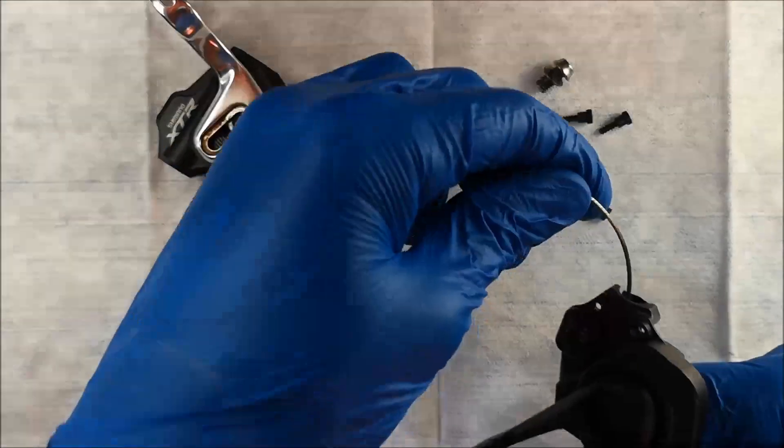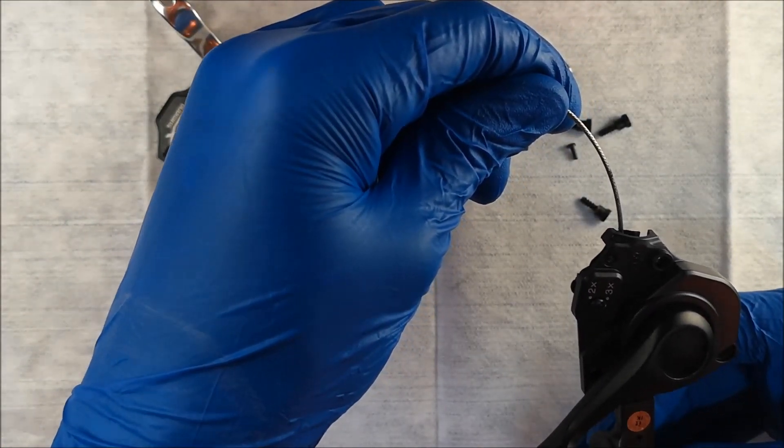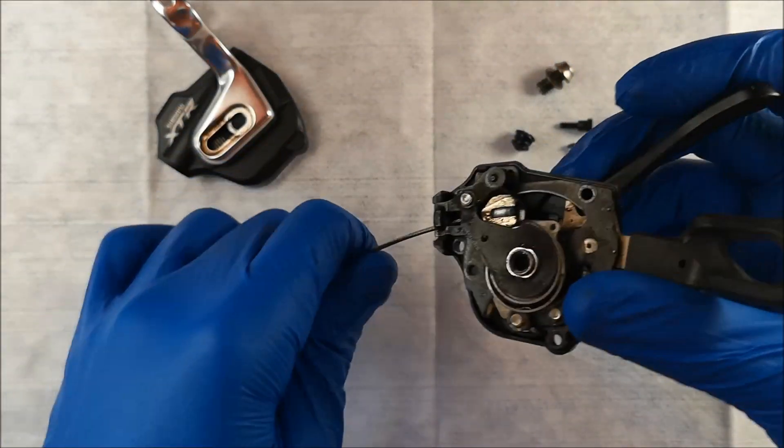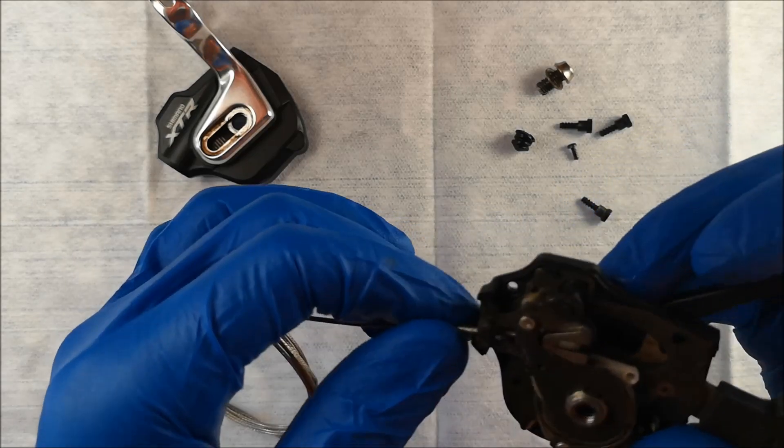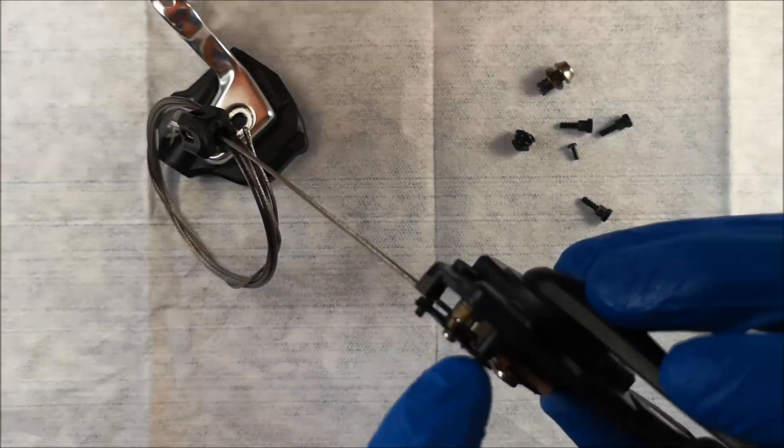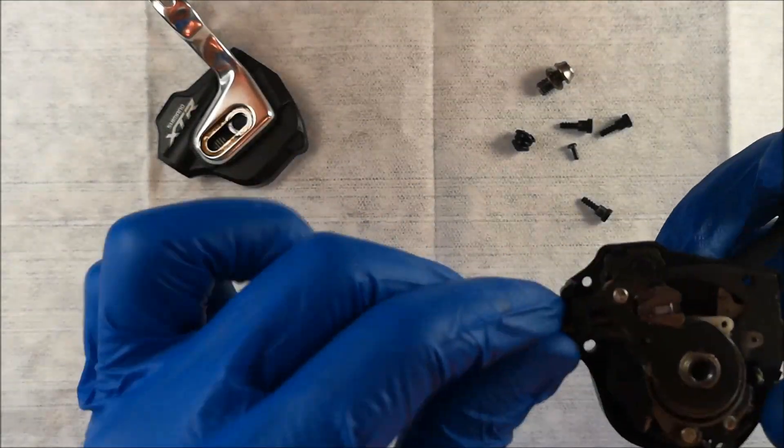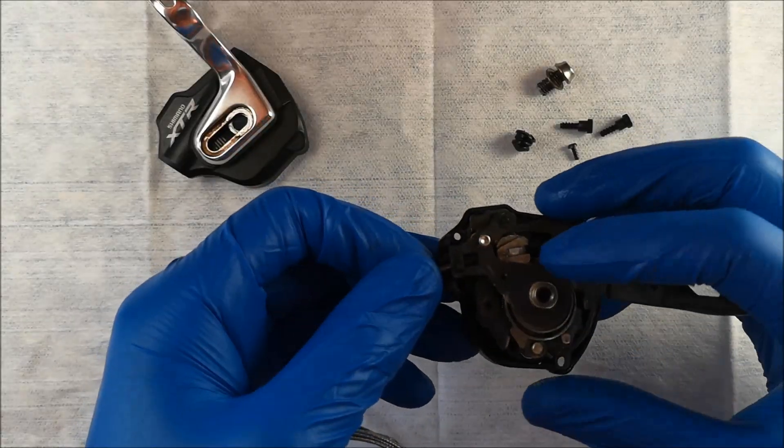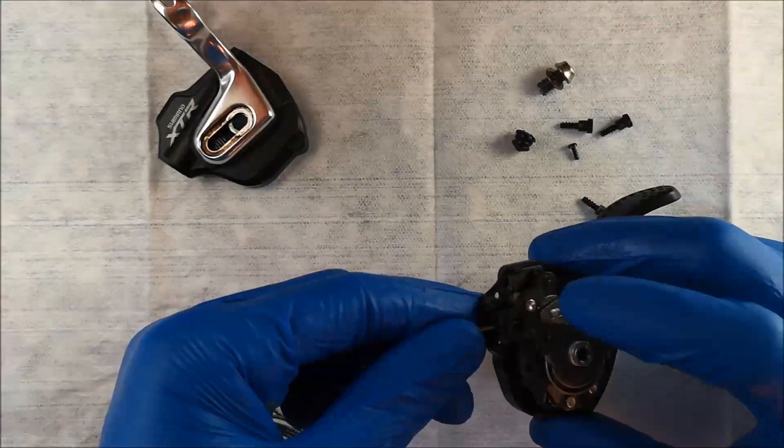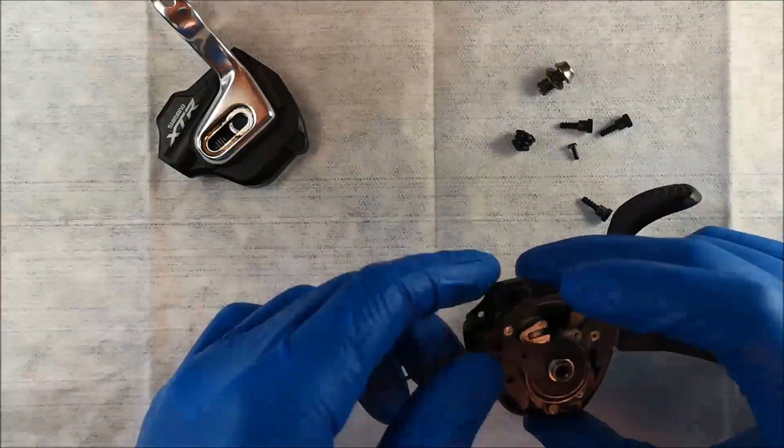If this does matter to anybody, this is the Shimano SL-M980, an XDR shifter, the older 2x1. And what we're looking for here is actually this little bugger right here. That little ratchet is what's doing all the work. And to me, it looks like if we remove this rivet pin thing, we can just pull that out and then this should work.